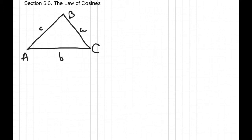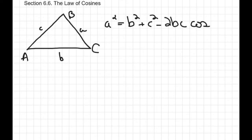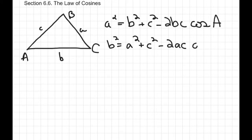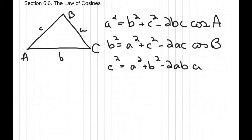The law of cosines says for any triangle ABC: side A squared equals B squared plus C squared minus 2BC cosine of angle A. For side B: B squared equals A squared plus C squared minus 2AC cosine of angle B. For side C squared: A squared plus B squared minus 2AB cosine of angle C. The pattern is that the side you're looking for always equals the sum of the squares of the other two sides minus 2 times those two sides times the cosine of the corresponding angle.